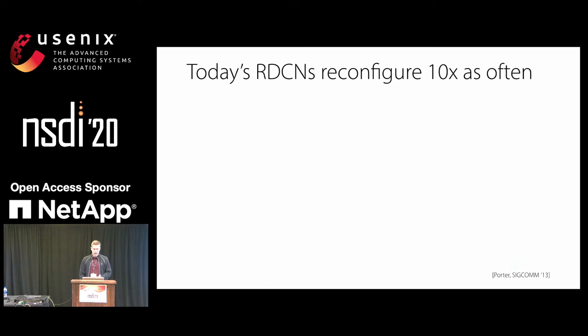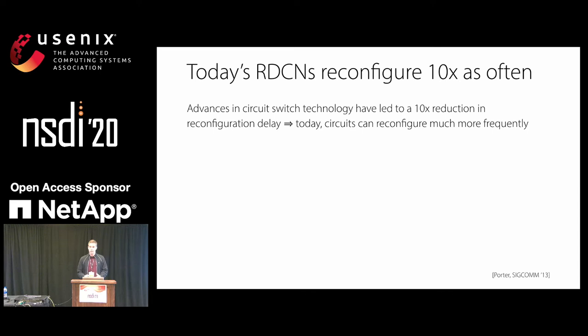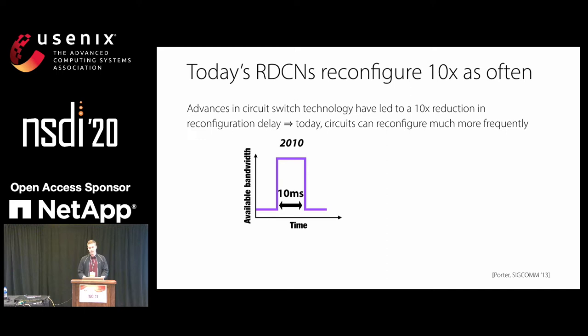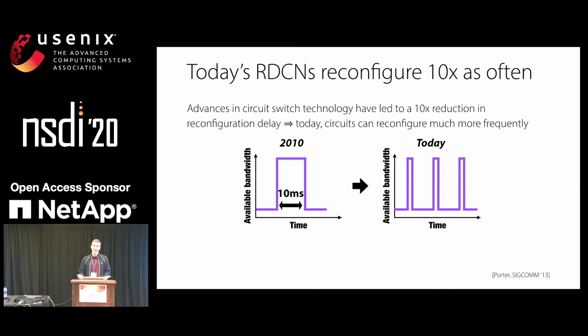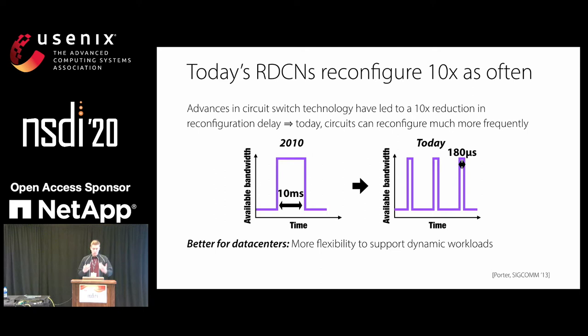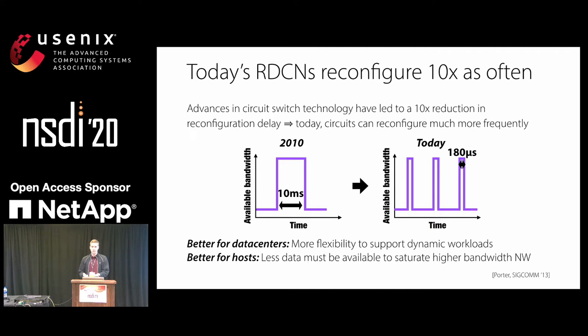This was really wonderful in 2010, but over the last decade, engineers and researchers have made a lot of advances in the underlying circuit switch technology, leading to a 10x reduction in reconfiguration delay — how long it takes one of these networks to reconfigure. These networks can now reconfigure much more frequently, so instead of a circuit being up for 10 milliseconds, today you get more but shorter circuits between any two racks. This is more flexible, supports more dynamic workloads, and means hosts have to do less batching and pre-buffering themselves.